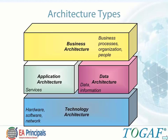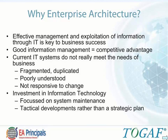The Data Architecture describes the structure of an organization's logical and physical data assets and data management resources. The Application Architecture is a blueprint for the individual application systems to be deployed, their interactions and relationships to core business processes. The Technology Architecture describes the software infrastructure intended to support deployment of core mission-critical applications.